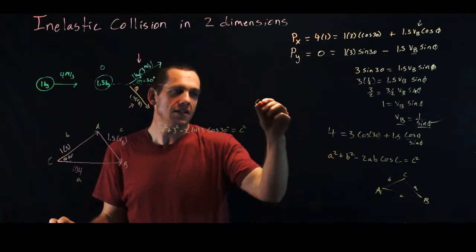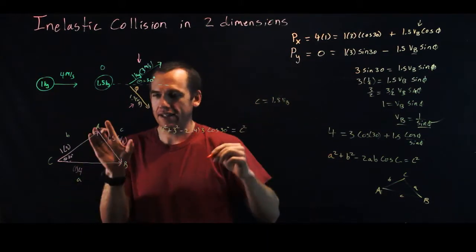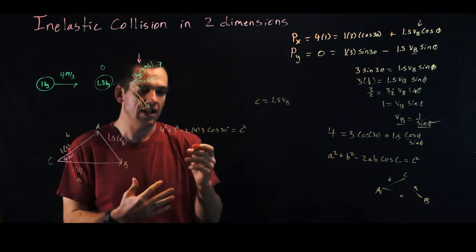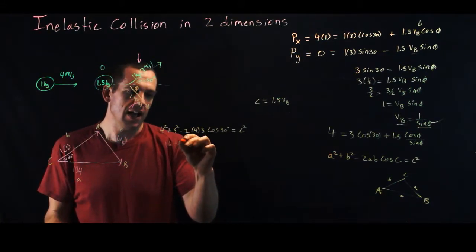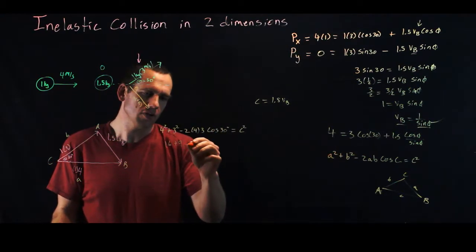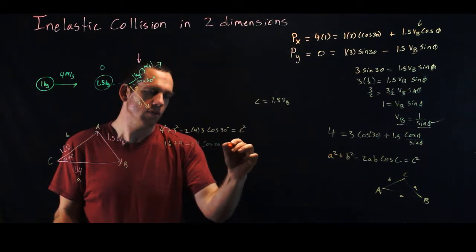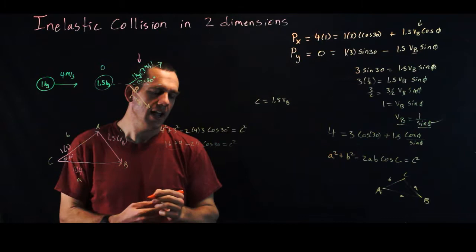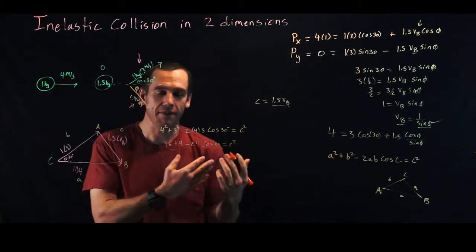And c squared, remember, c is equal to 1.5 vb, that's how that side was designated. So with this, we can actually now simplify a little bit, 4 squared is 16, 3 squared is 9, 2 times 4 is 8, times 3 is minus 24, cosine 30, equals c squared. Well, this you can throw right into your calculator and get a value for c, and once you know c, divide it by 1.5 and you have vb,